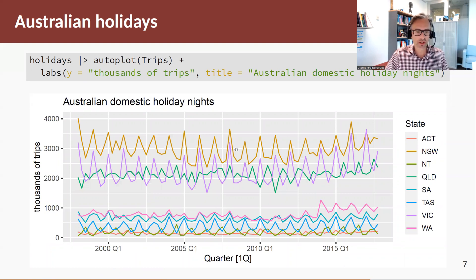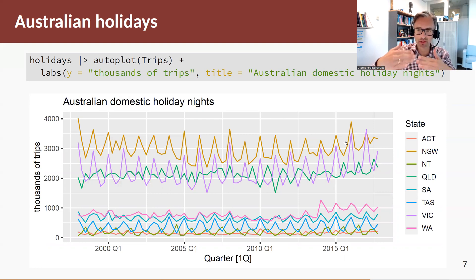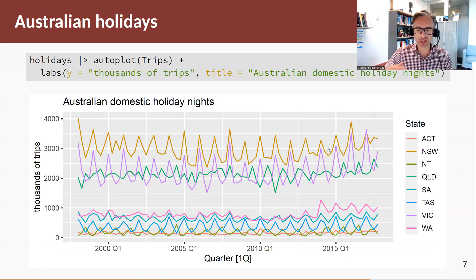Looking at the time plot: it's a little squished, but we can see strong seasonal components across all the time series. Going down the colors, we have ACT, New South Wales, and the other states and territories. There's also a bit of an increasing trend since around 2010 for New South Wales, which has the highest number of visitors, as well as for Victoria and Queensland — the three states with the most holiday visitors.